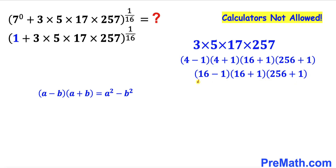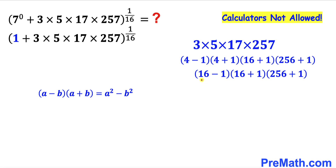Now let's focus on (16−1) times (16+1) and apply this identity once again. This whole thing can be written as 16 squared minus 1 squared. We know that 16 squared is 256 and 1 squared is 1, so this becomes 256 minus 1.